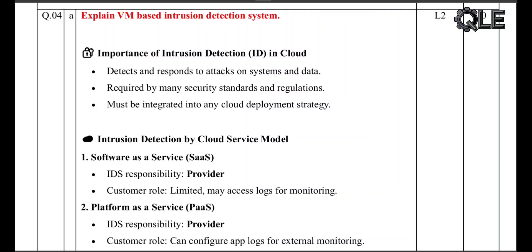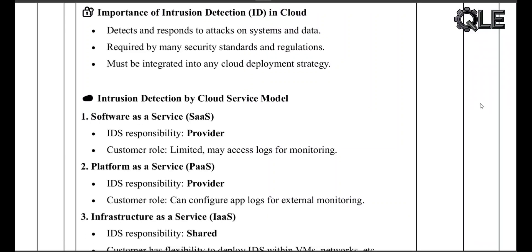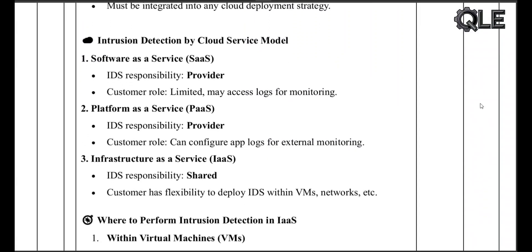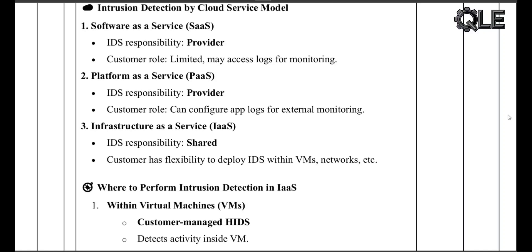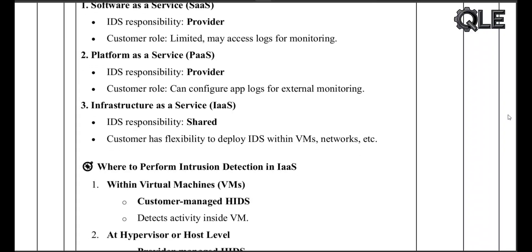IDS by cloud service model — let's look at how IDS responsibilities vary based on the cloud model. In Software as a Service (SaaS), the IDS is managed by the cloud provider; customers have limited access, usually just to activity logs. In Platform as a Service (PaaS), the provider still manages the IDS, but customers can configure application logs for external monitoring. In Infrastructure as a Service (IaaS), IDS becomes a shared responsibility; customers can deploy their own IDS tools inside virtual machines and networks.